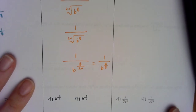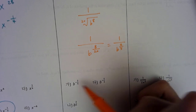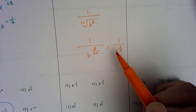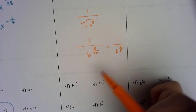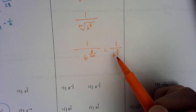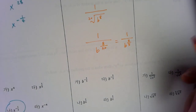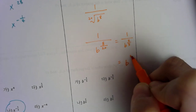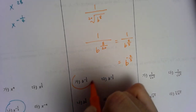Now I need to look at the answer choices. All the bases in the choices are in the numerator, but my base is in the denominator. So I can't just choose an answer with the base in the numerator. Using the negative exponent property to flip: I move b up to the numerator and change the sign of the exponent. So my final answer is b to the negative 2 over 5.